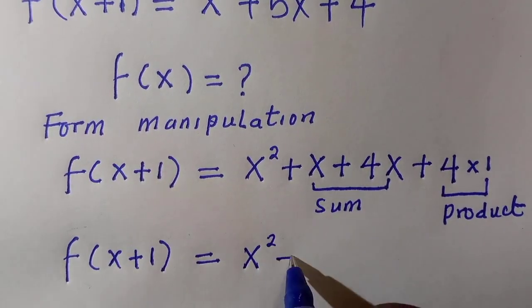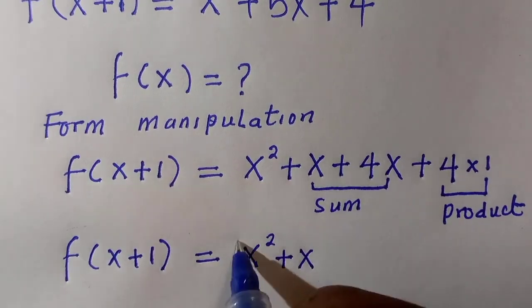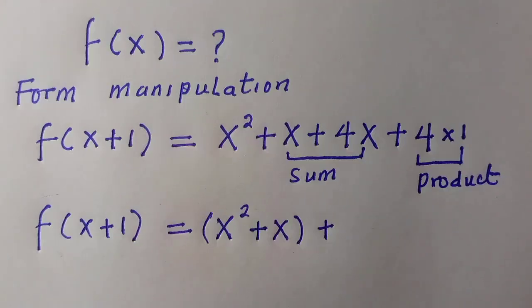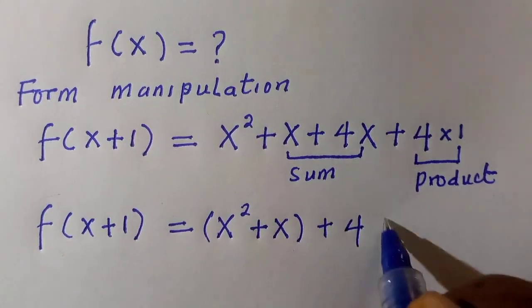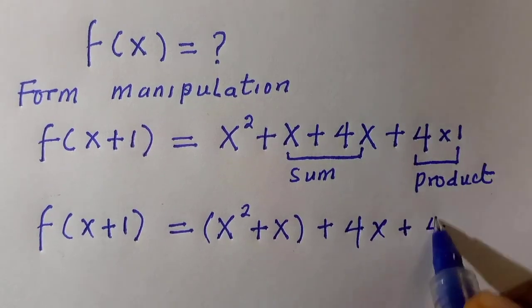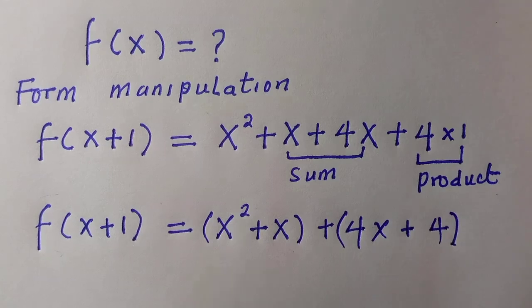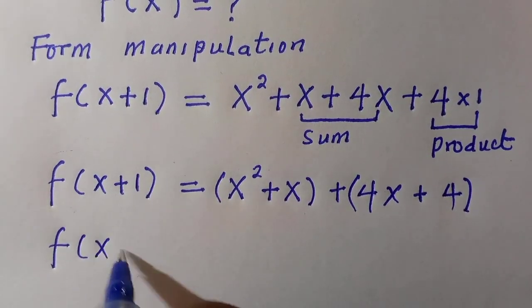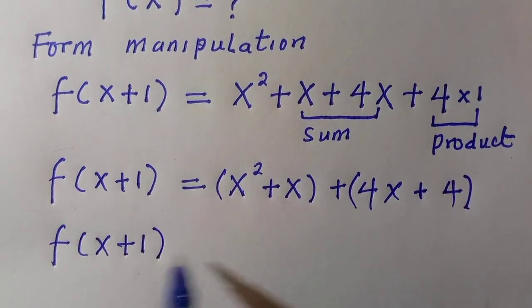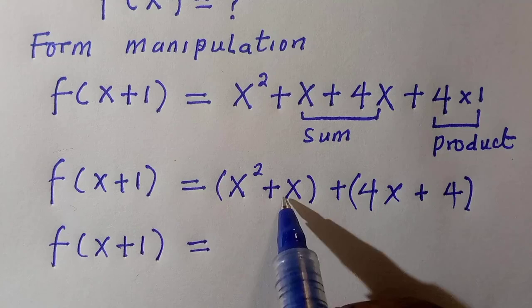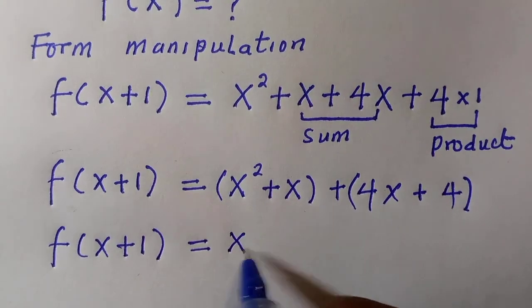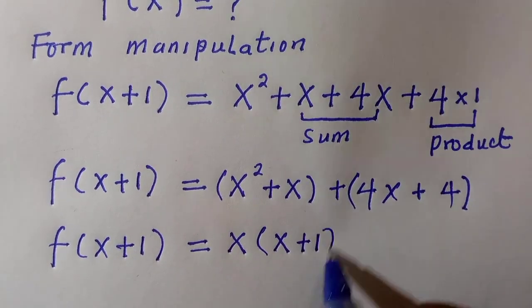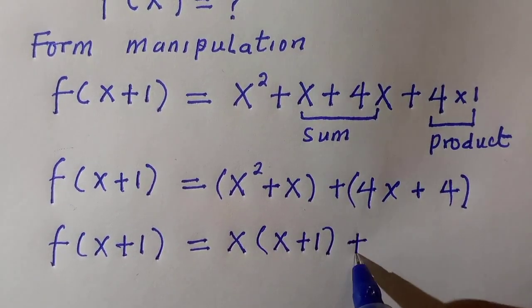let's combine the first and second entries, which is x² + x. We are going to combine it together and put it in a bracket, plus the other part, which is 4x + 4. We also bracket this one. And again, after bracketing them, we are going to write this as f(x+1) equals,